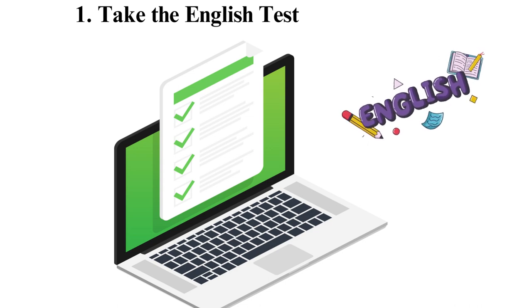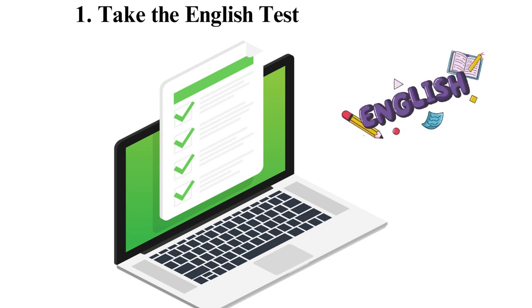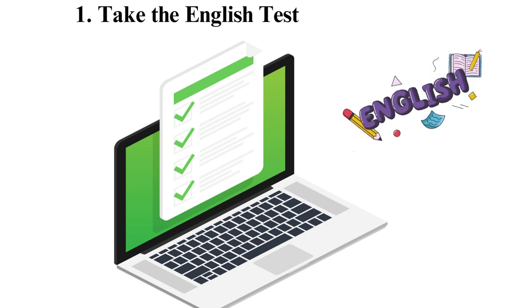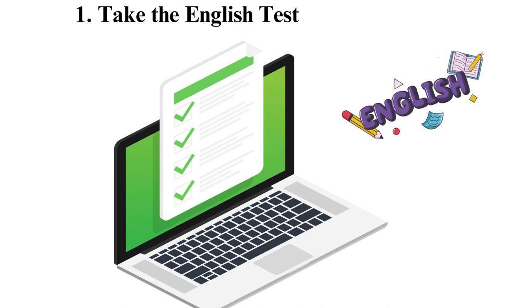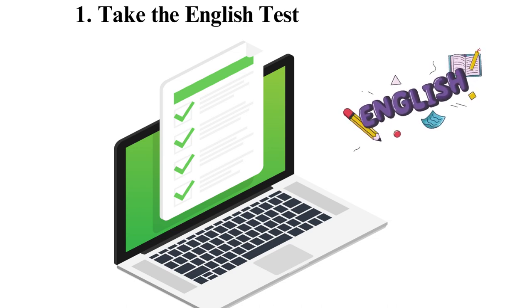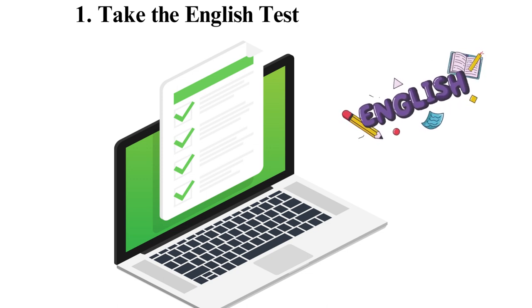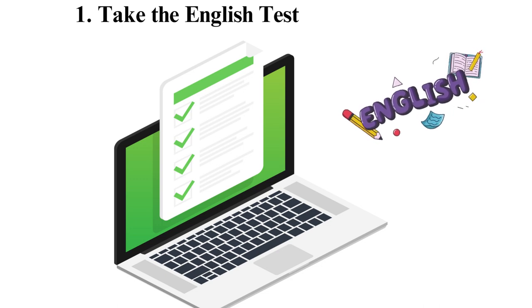One: Take the English test. The ACT English test evaluates a student's grasp of the conventions of standard English grammar and usage, including sentence structure, punctuation, and rhetoric skills. This test runs for 45 minutes and has 75 multiple-choice questions. The questions are based on five reading passages, each with 15 questions. The questions in each passage measure students' understanding of the passage and their ability to apply grammar rules and rhetorical strategies.